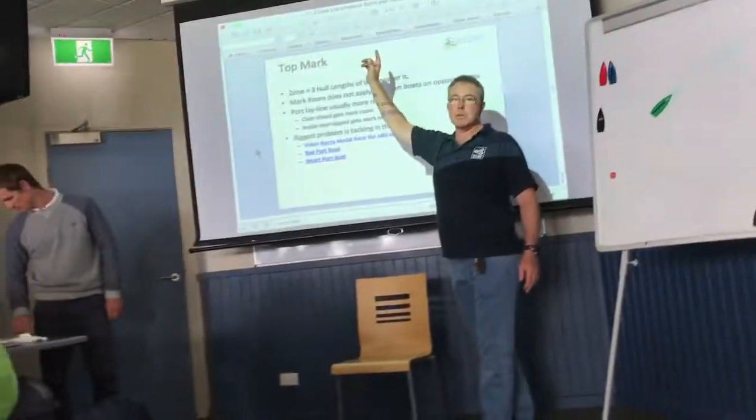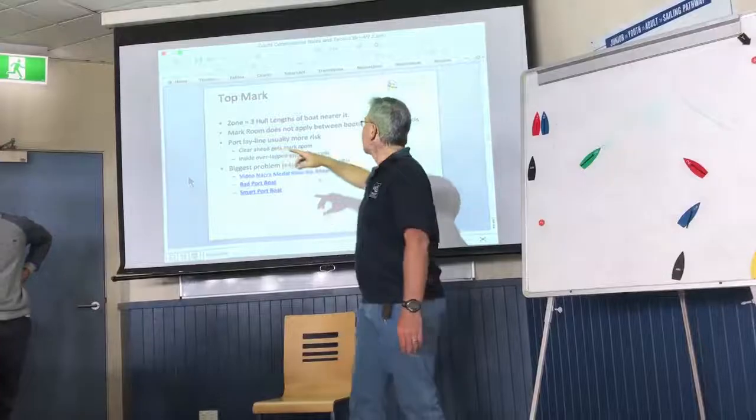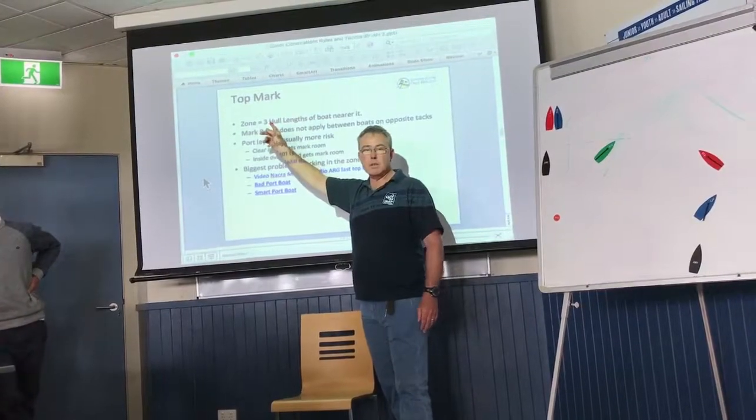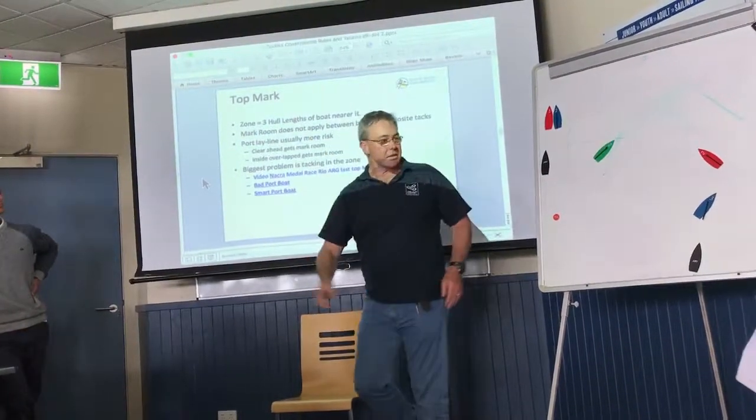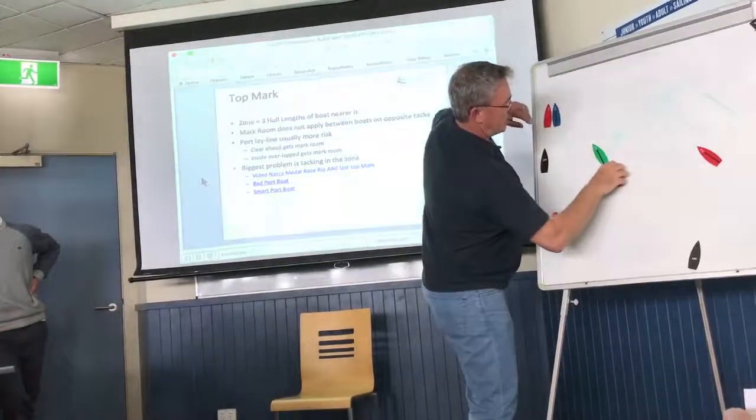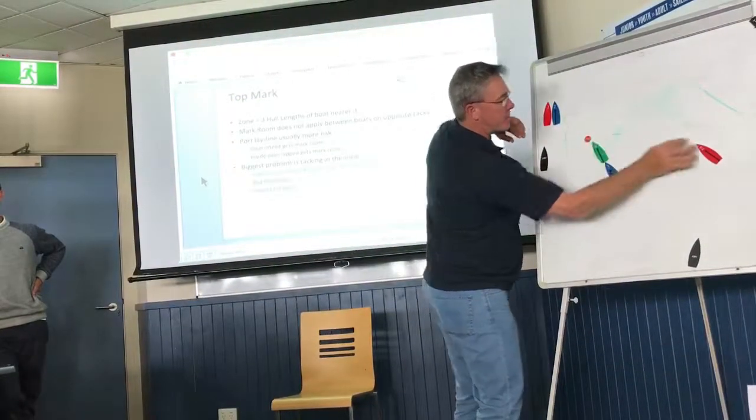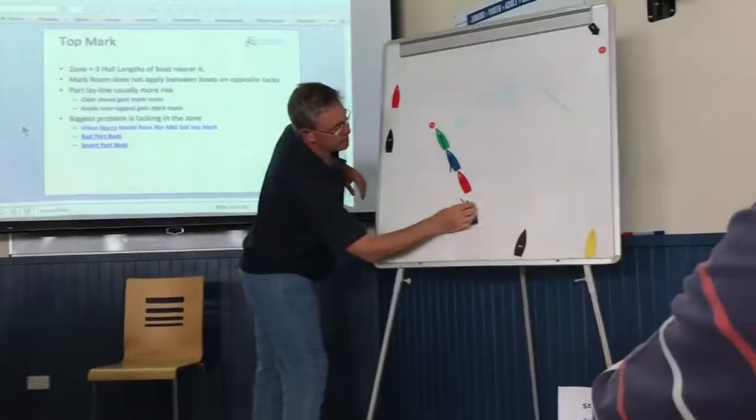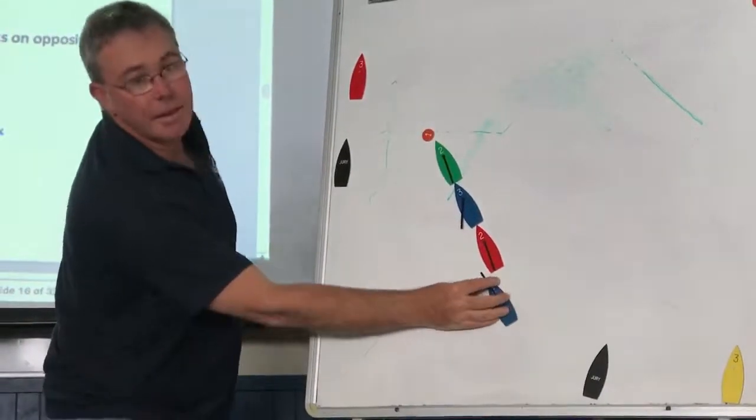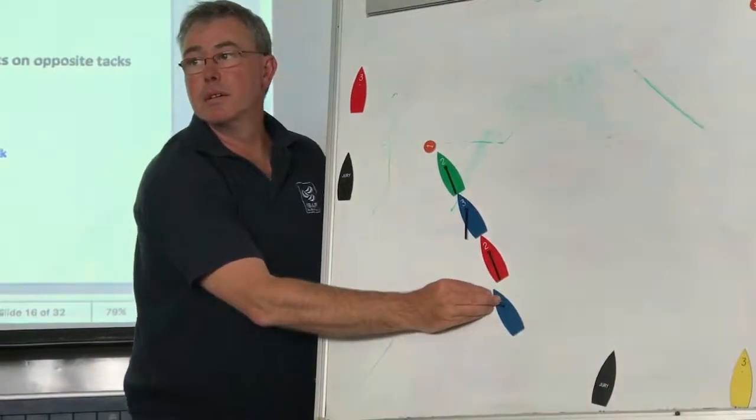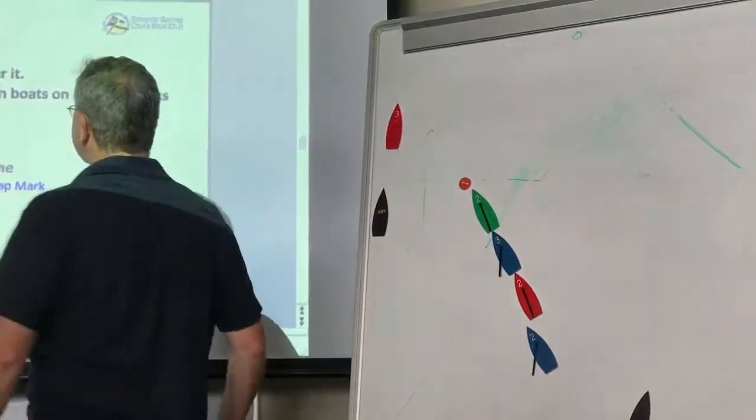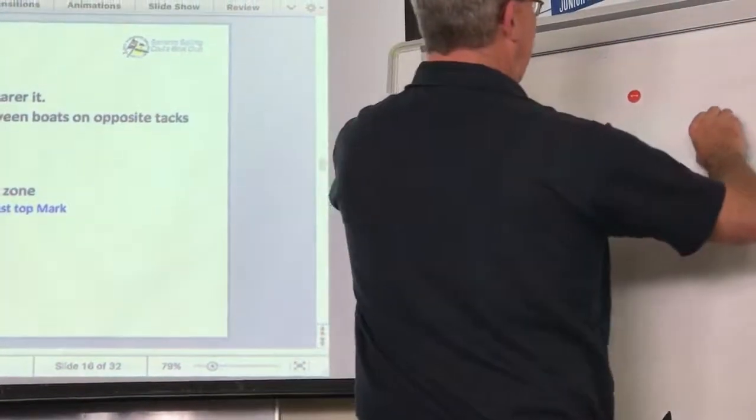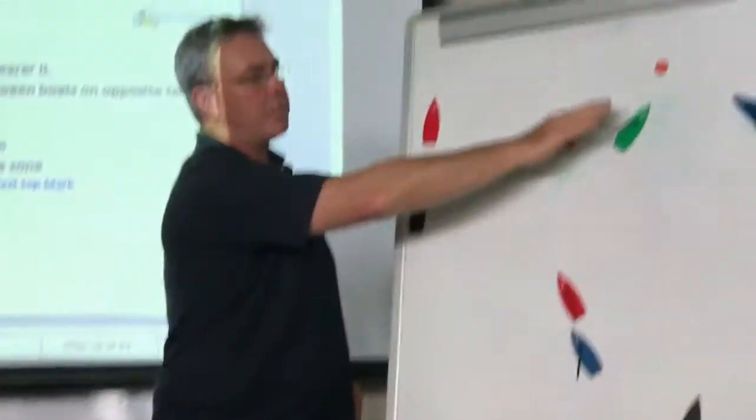A couple of things. So we talked about overlap, and the bowsprit is part of the overlap. But the bowsprit is not part of the hull lengths for the zone. So that's a bit confusing. So at three hull lengths, if that's the mark here, we've got three hull lengths. Keelboat with its bowsprit is in the zone there. He's overlapping. So the common one is that we talked about with Argentina.